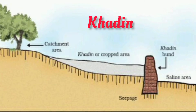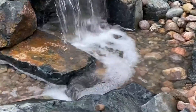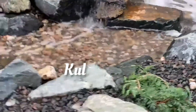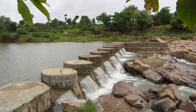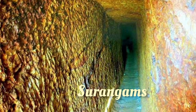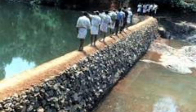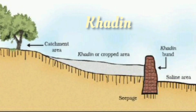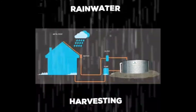Some traditional water harvesting systems are: khadins, tank irrigation, and nadis found in Rajasthan; pond irrigation found in Jammu and Kashmir; kuls in Himachal Pradesh; bundis in Madhya Pradesh and Uttar Pradesh; ahars and pynes in Bihar; bandharas and tals in Maharashtra; eris (tank irrigation) in Tamil Nadu; surangams in Kerala; and kattas in Karnataka. Today's topic ends here. In the next video I will be discussing the traditional water harvesting system known as khadin and the modern rooftop water harvesting system, so stay tuned.